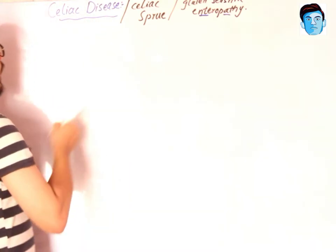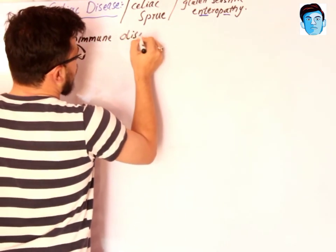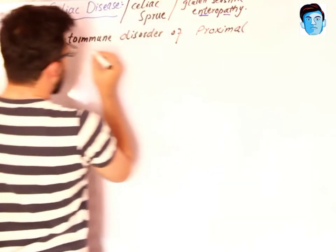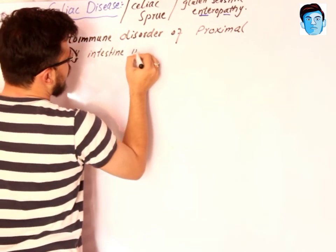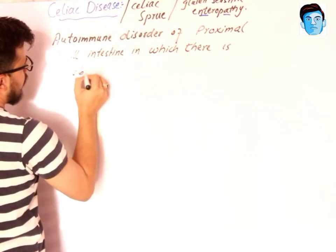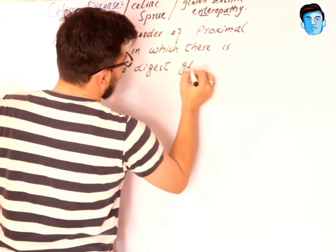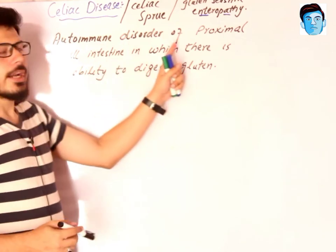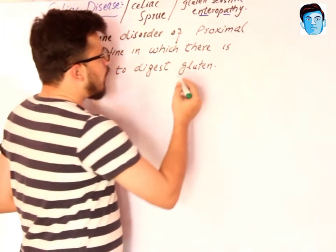Celiac disease is an autoimmune disorder of the proximal small intestine in which there is an inability to digest gluten.